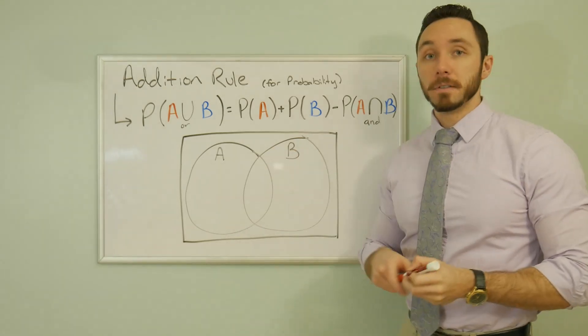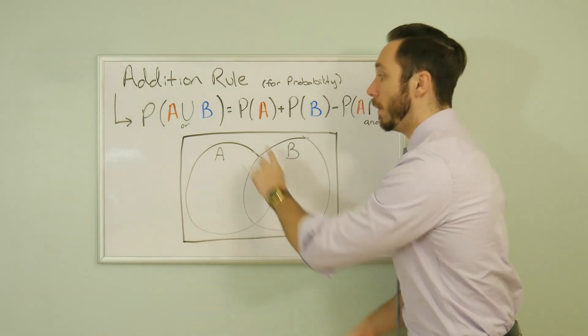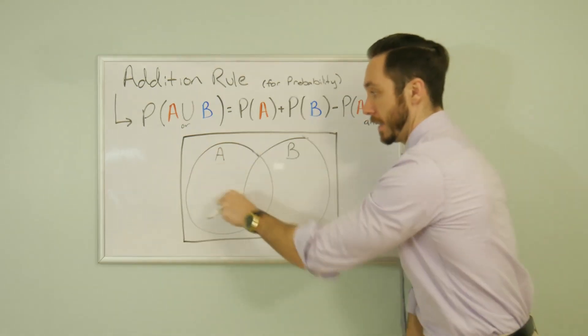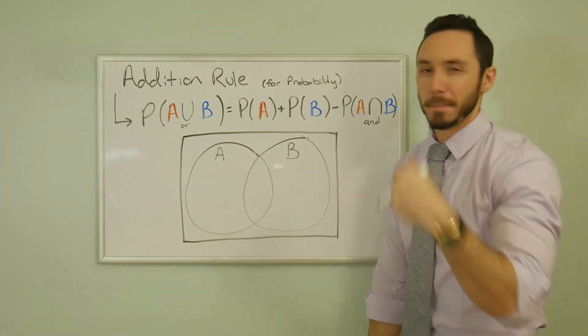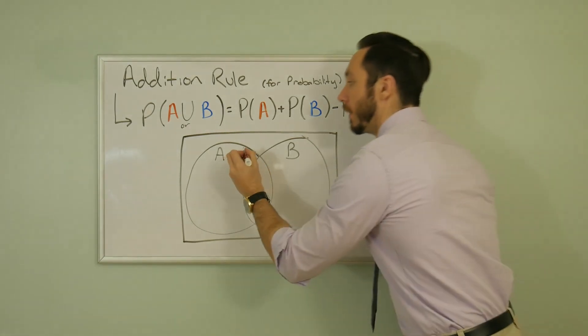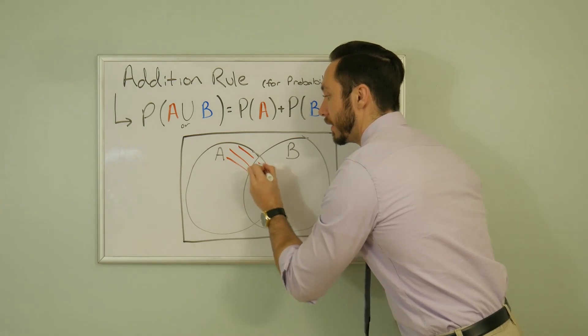So the probability of liking apples, that is just this circle, this whole, whole, whole circle. It's this portion and this portion, because if you like apples and bananas, then you like apples, right? So it's all this section inside here.